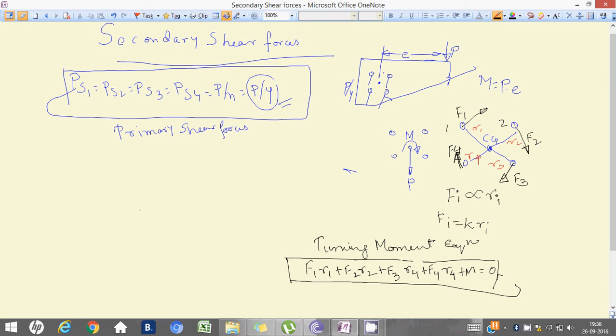Now, as you know, Fi is equal to K into Ri. So, it means nothing but F1 equal to K into R1, F2 equal to K into R2 and so on. So, if we put the value of F1, F2 in this equation...